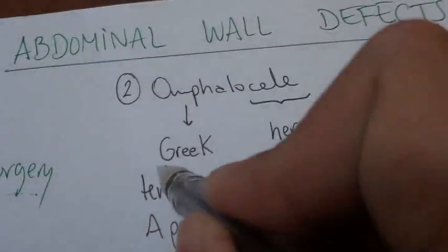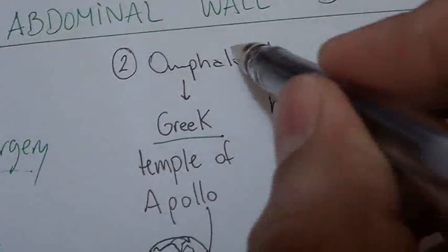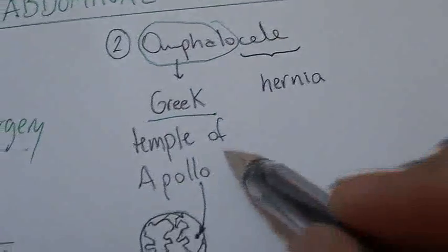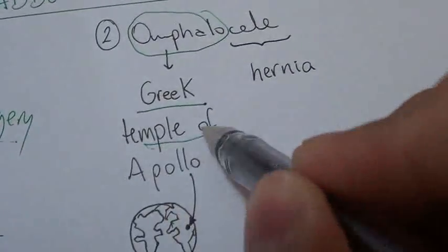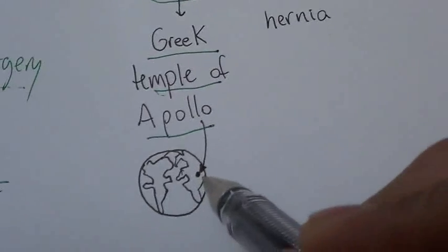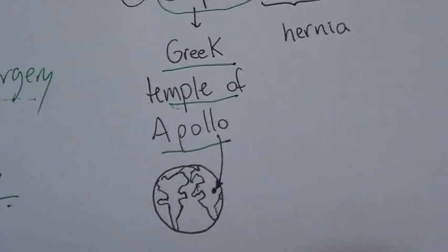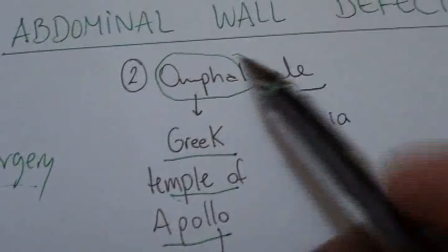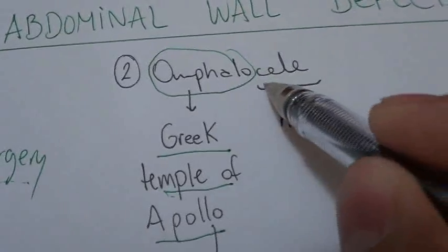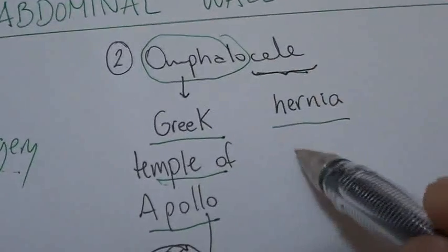Next topic, Omphalocele. This word comes from the Greeks. Omphalos was the name of a temple of Apollo because they thought that it was the center of Earth. So that's why our navel, our umbilicus, is the center of our body. And the word cele means like a hernia with a sack.